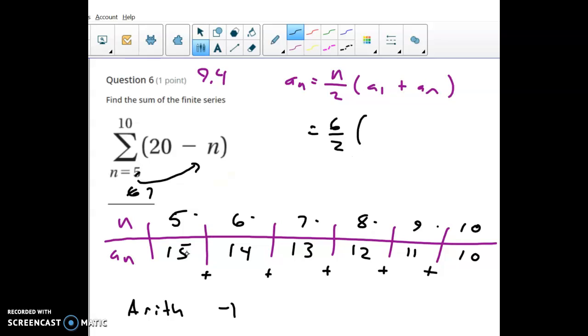So n is 6. The first value, and this is where I think it's a little bit goofy, is a sub 1 normally means like the first term. So we'd have to like go backwards, right, to get the first term or whatever. But it's really the first term in the things we are summing. So the things we are summing the first term is 15. And the last term in what we're summing is the 10.